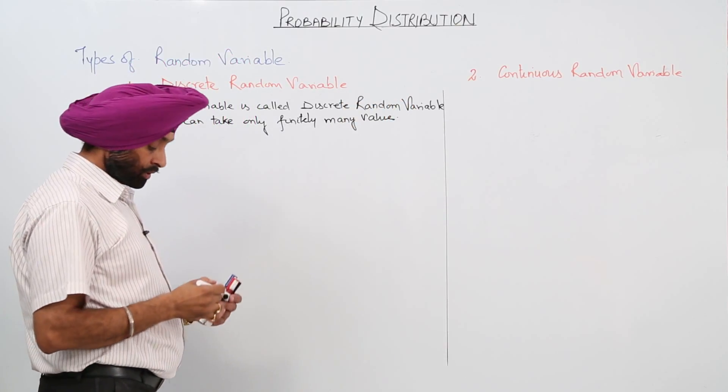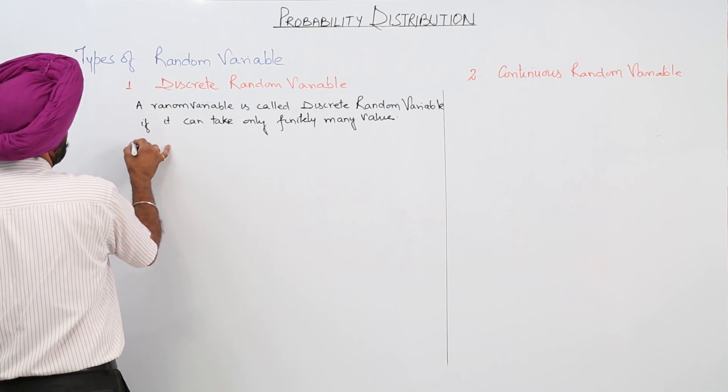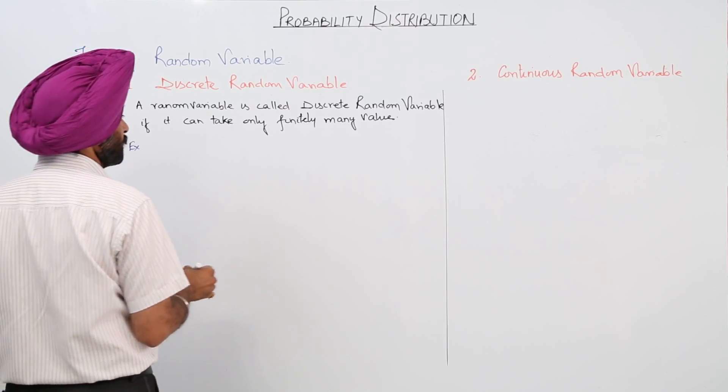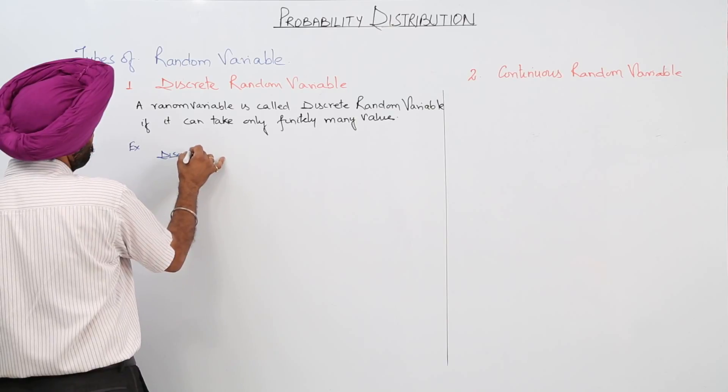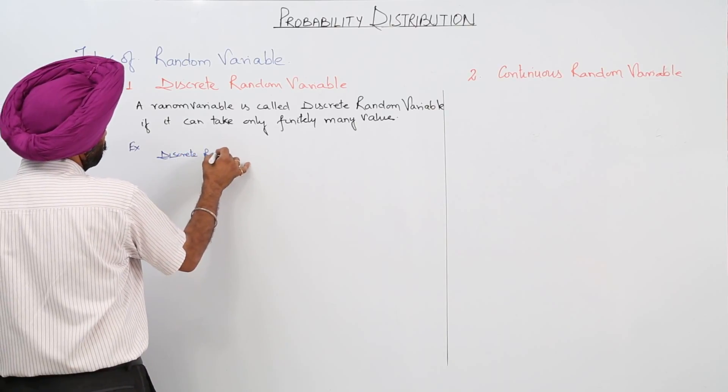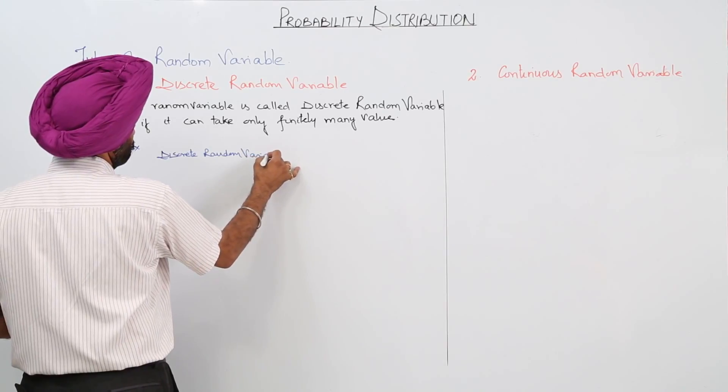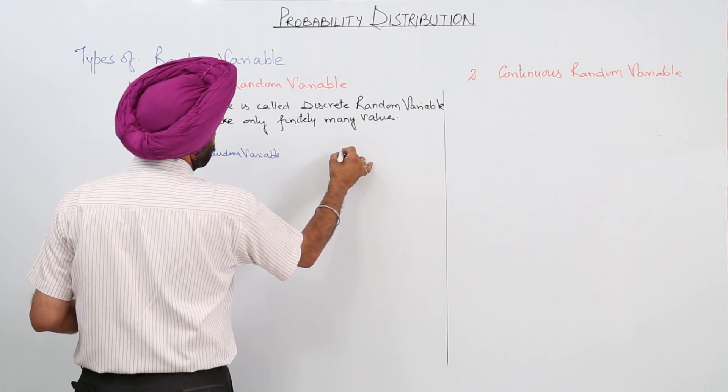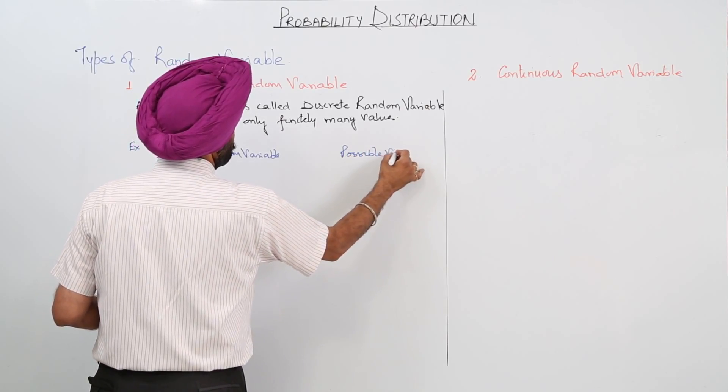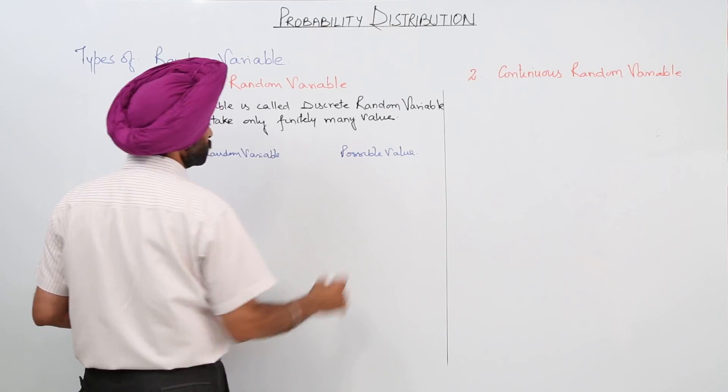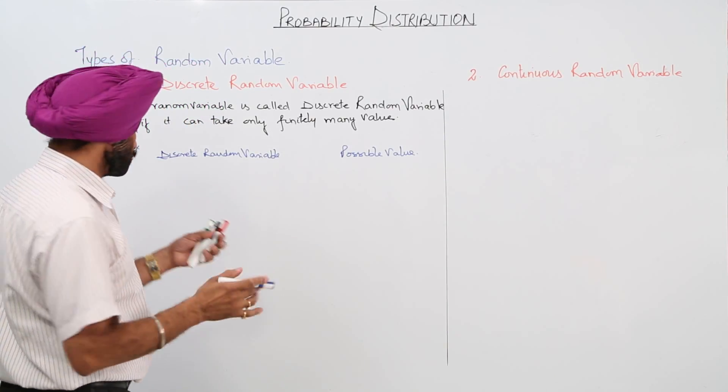Now, for example, here suppose we are having discrete random variable and here there are possible values. I am just going to give you very simple things which we have done many times.